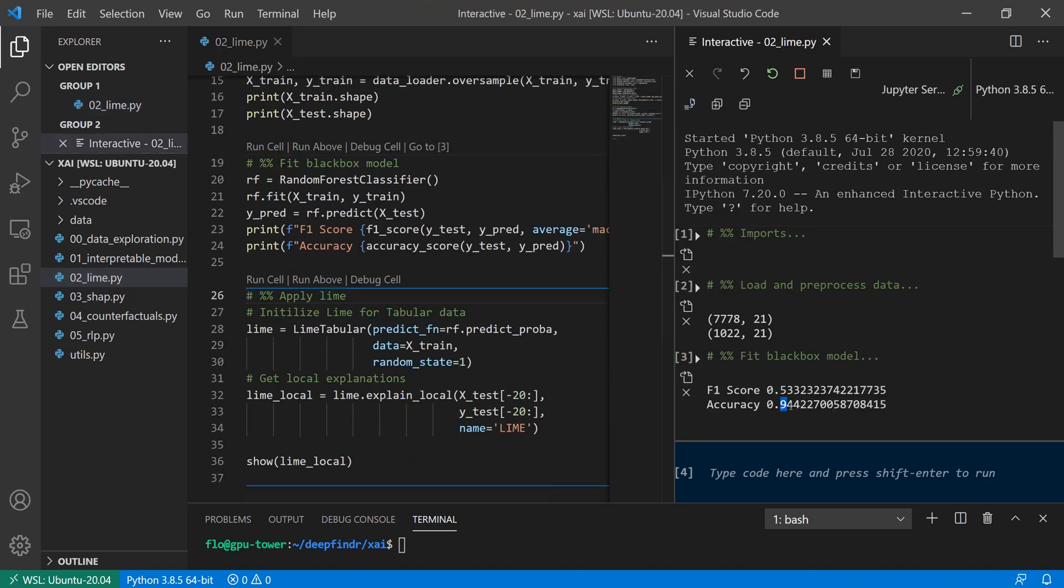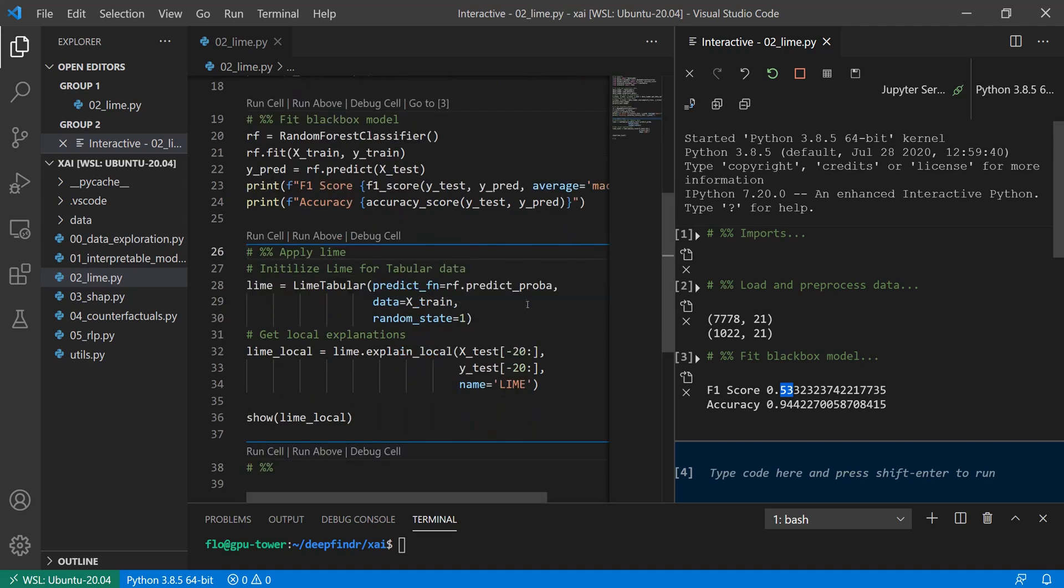And now what we do is we create this random forest classifier and fit it using our data. And as you can see, the accuracy is much better than the previous models we had. And also our F1 score is slightly increased. It's still not good, as it's a relatively complex imbalanced dataset, but accuracy is pretty good. So we can continue with that.